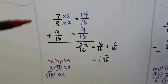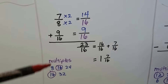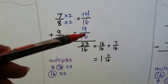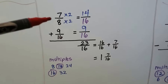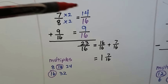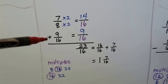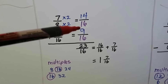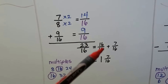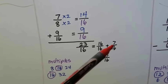Now we add 7/8 and 9/16. The multiples of 8 and 16 show they can meet at 16, so 9/16 stays as is. The 8 needs to be multiplied by 2 to become 16, so 7 is multiplied by 2 to become 14/16. Be sure to pay attention to the sign so you don't accidentally add when you should subtract. Adding 14 and 9 gives 23/16 — improper — so we pull out 16/16 as one whole, leaving 7/16: answer is 1 and 7/16.